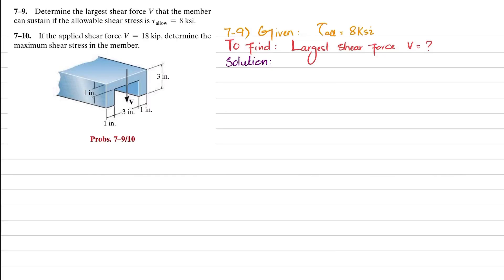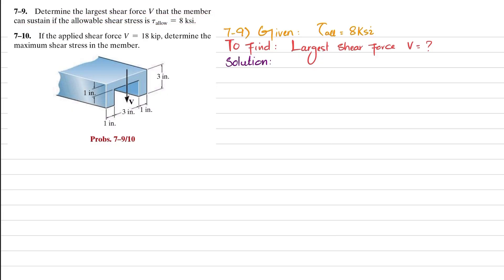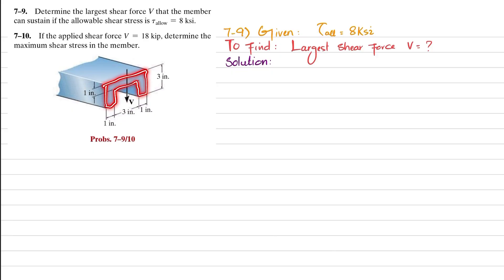Welcome back. Problem 7-9. The statement is: determine the largest shear force that the member can sustain if the allowable shearing stress is 8 KSI. So the allowable shearing stress is 8 KSI, and you have to find the largest shear force that can be applied to this cross-section of the beam.